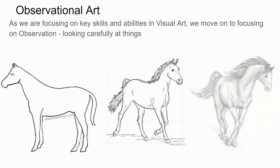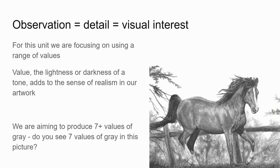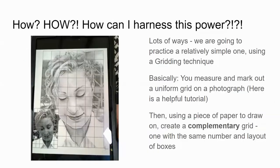If we go back a step, how many values do we see in the horse in the middle? Maybe two. How many in the one all the way to the left? One. How many in this one on the right? Maybe five values in that horse on the right with extremely accurate line drawing. So the more we use a range of values, the more appealing and interesting our drawing is going to look.